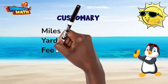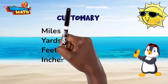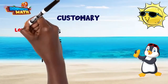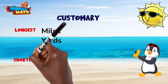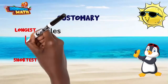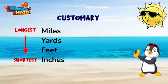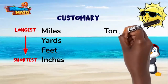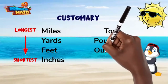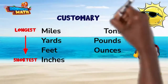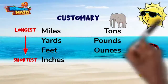yards, feet, and inches. Miles are the longest and inches are the shortest. For your reference, there are 12 inches in one foot, three feet in one yard, and 5280 feet in one mile. You also have tons, pounds, and ounces for weight.